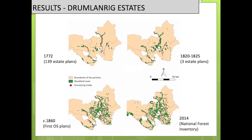About the results: as an example here of John Drumlanrig Estate, I used 140 estate maps, including three covering a very large area by William Crawford. As we can see, there is a very sharp increase in woodland cover over time from 1772 up to the early 19th century, the mid 19th century, and up to today. This is consistent across the whole study area.